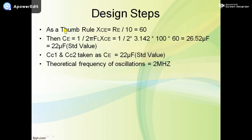A small correction in the design steps slide: the formula for CE is not 10 divided by (2π × FL × XCE) — it should be 1 divided by (2π × FL × XCE). With this corrected formula, we still get CE = 22 µF.